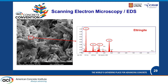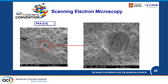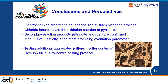We can find ettringite already after 35 days of testing, and confirmed that pores were clean in a non-reactive aggregate with 0% total sulfur content. The conclusions are: the electrochemical treatment induces the iron sulfate oxidation process; chloride ions catalyze the oxidation of pyrite; secondary products were confirmed with microscopy techniques; and the modulus of elasticity is the most promising evaluation parameter for sulfate-bearing aggregates. The next step is to continue testing more aggregates with different total sulfur contents to ultimately develop a full quality control testing protocol.